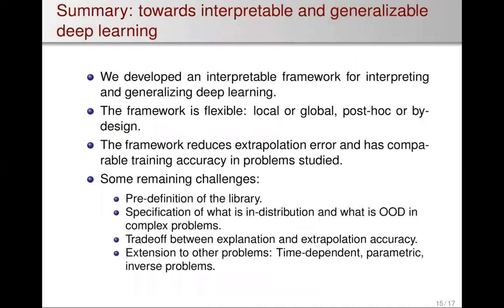To summarize: we developed an interpretable framework for interpreting and generalizing deep neural networks. The framework is flexible — it can be applied locally, globally, post-hoc, or by-design — and reduces extrapolation error in most test cases while maintaining comparable training accuracy. Remaining challenges include pre-definition of the kernel library, specifying in-distribution vs. out-of-distribution boundaries in complex problems, the trade-off between interpretability and extrapolation, and extensions to time-dependent problems, parametric problems, PINNs, and inverse problems as future work.